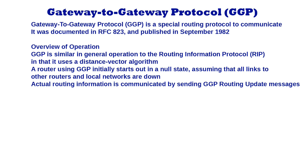Each router receiving a routing update message knows that since it can reach the router that sent the update, it can also reach all of those router's reachable networks at the cost of one additional hop. It uses this information to update its own internal tables of destinations and metrics. It then sends out its own routing update to its attached networks to propagate the information learned from other routers. This process continues until routes to all GGP routers spread across the internet, just as they do in RIP.